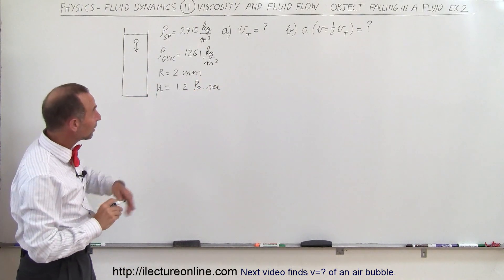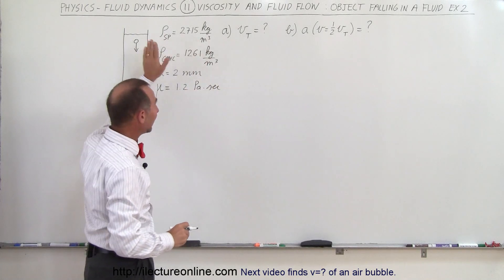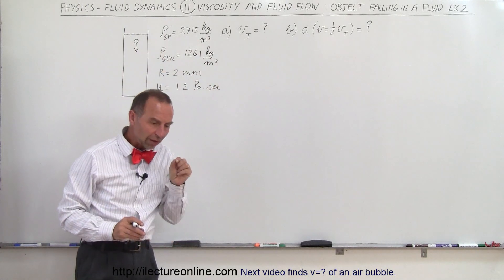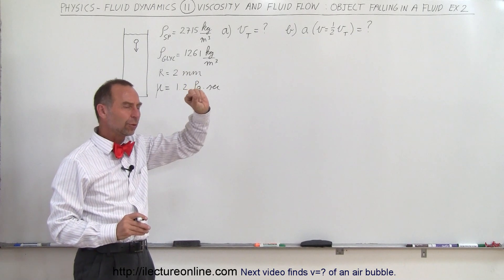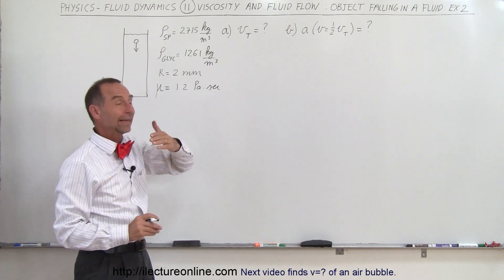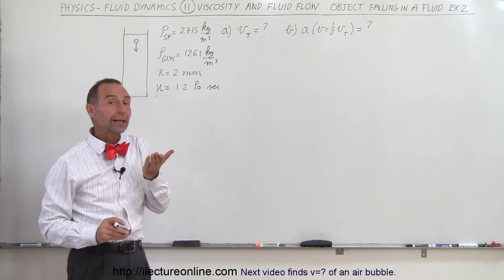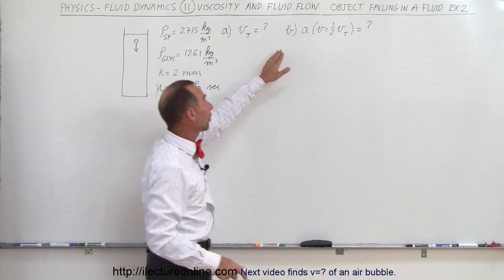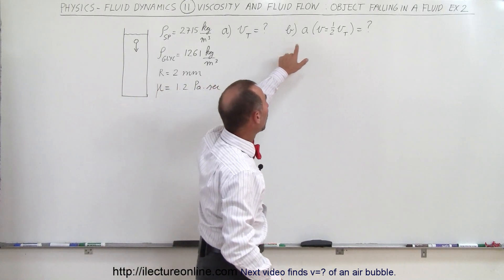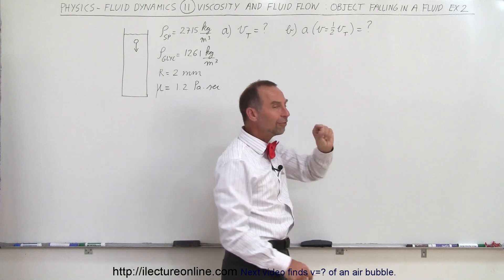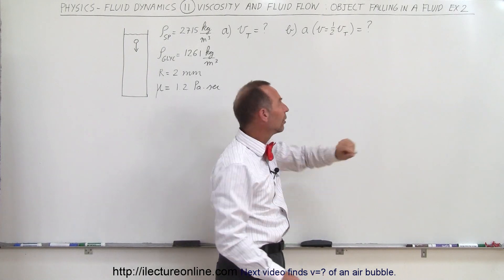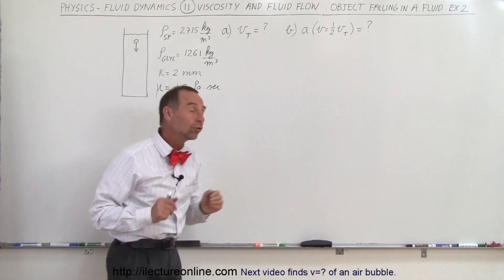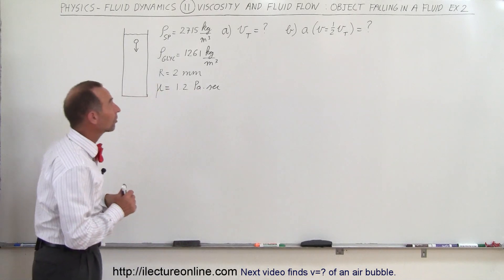First we need to find the terminal velocity of that sphere. Secondly, before it reaches the terminal velocity, as the sphere is moving through the fluid, it will be accelerating until it reaches terminal velocity. So the question for part B is: what is the acceleration of that sphere when the velocity is half the terminal velocity? Let's do each part separately.